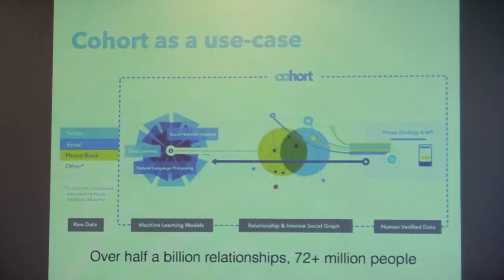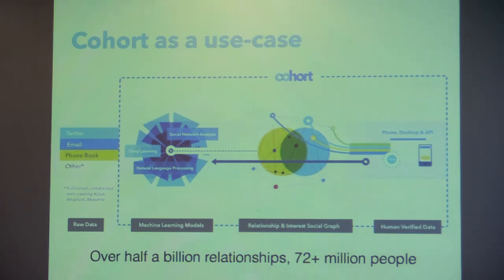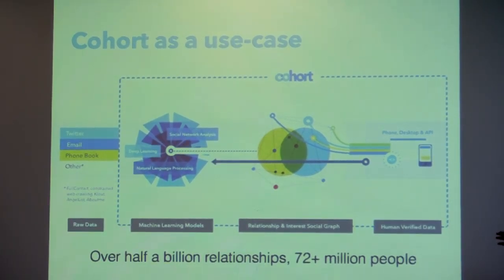Going back to Cohort's architecture: we are collecting Twitter, hooking in with email and phone contacts, and also information we can get from FullContact and other services, to give as much information as possible about people and their connections. The machine learning portion is all written in Python. We're working with a number of technologies for natural language processing and deep learning to create this social interest graph. We have, from a variety of sources, over half a billion relationships with some information on about 72 million people.